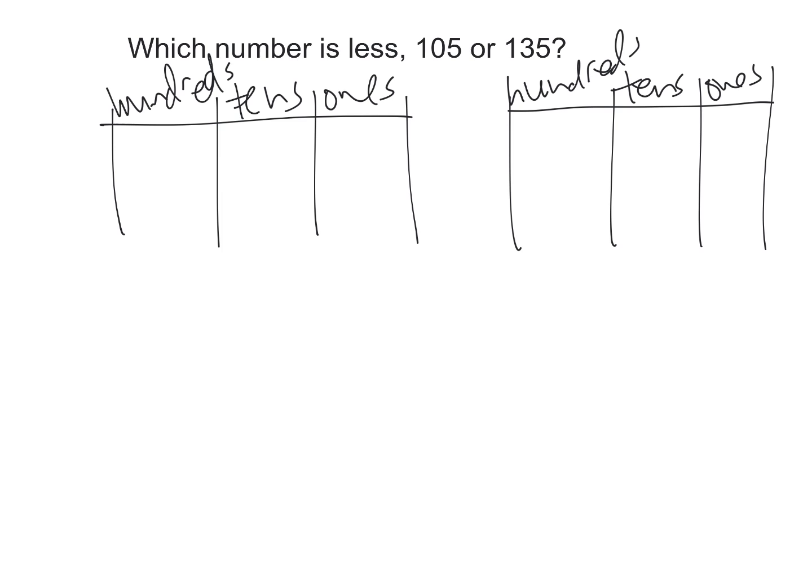And we're going to model that. So if we want to model 105, I'll model 105 with blue. That's going to look like this. There's your 100, and then 5 is going to be 1, 2, 3, 4, 5, right there.